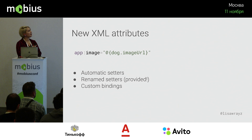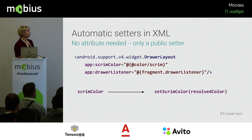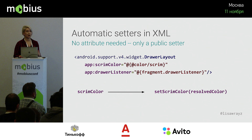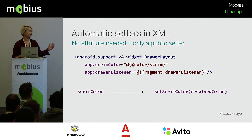You can also create new XML attributes in data binding in three ways. The first is automatic setters: if there is a public setter with the same name as the attribute, you can write that attribute in your XML as if it existed. For example, because there is a `setScrimColor` method on `DrawerLayout`, if you write `scrimColor` with a data binding expression in your XML, it will just figure out what to do for you. Pretty cool.